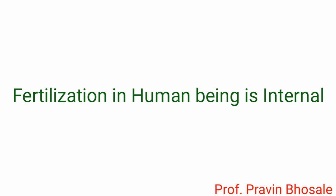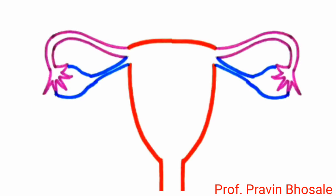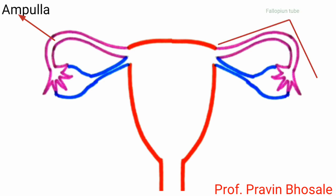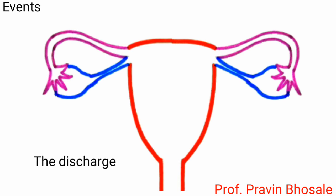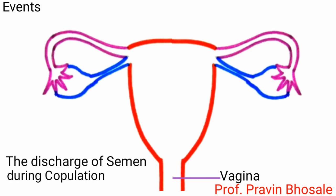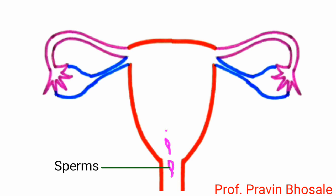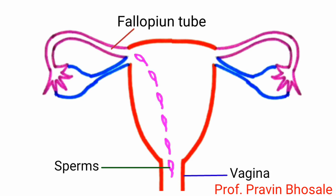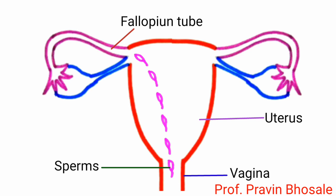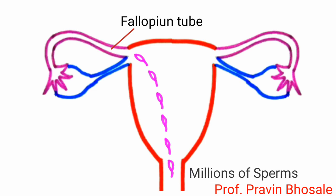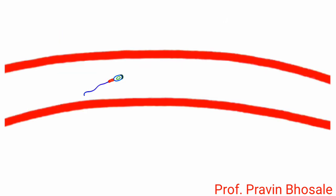Fertilization in human beings is internal. It takes place usually in the ampulla of the fallopian tube. The discharge of semen in the vagina during copulation is called insemination. Sperms swim from the vagina to the fallopian tube through the uterus. Out of millions of sperms, only a few reach the fallopian tube.